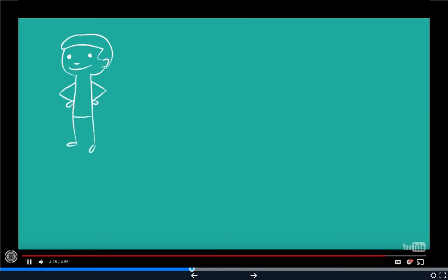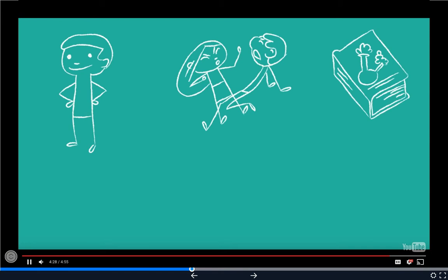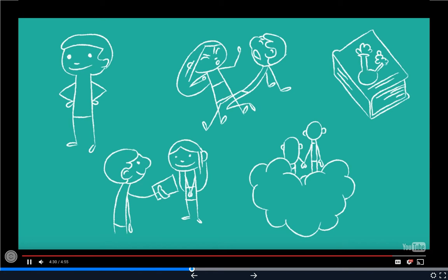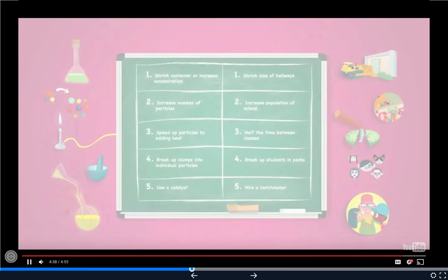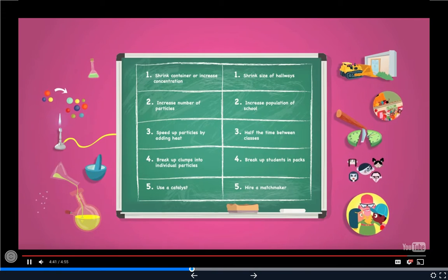So to sum up, if a future chemist wants a date for the dance, he must collide with another person and knock the books out of their hands. And if a chemist wants to make a chemical reaction occur, the particles must collide in the correct orientation with an appropriate amount of energy. And both of these processes can be accelerated through the five methods I've described.